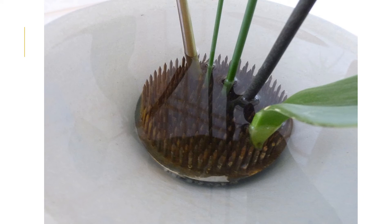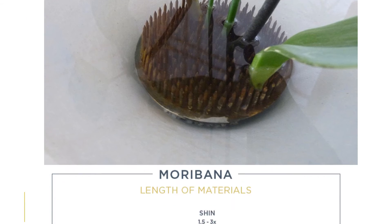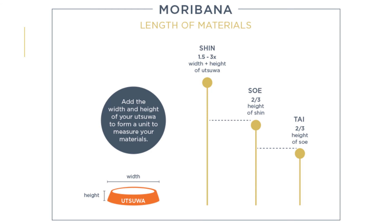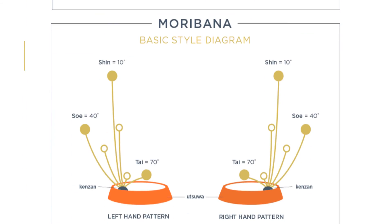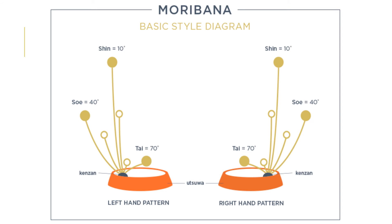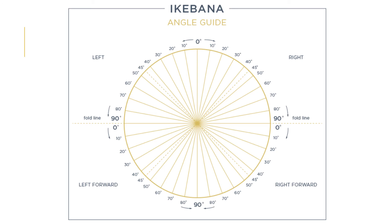The heights of plant materials in moribana style even follow mathematical equations based on the width and height of the utsuwa. Simply put: the tallest is the shin, followed by the so, and the shortest is the tai. The placement of plant material also follows varying degrees of angles — the angle nearest to the y-axis is the shin, followed by the so, and then the tai.